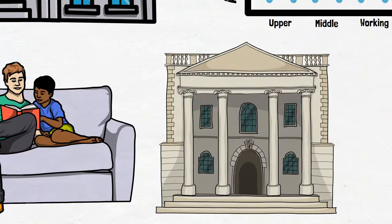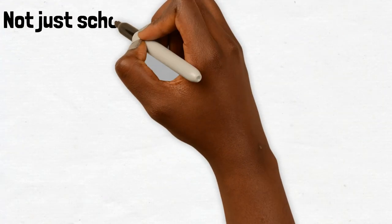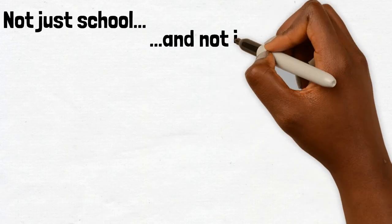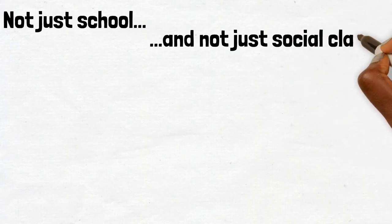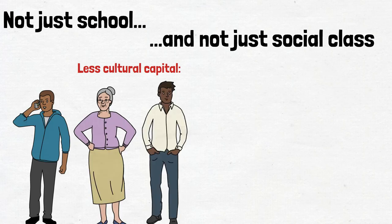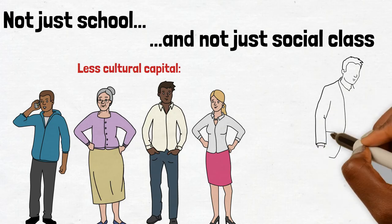Cultural capital is certainly not limited to school — it applies to all life stages and ages, and can be used to explain other inequalities such as those related to age, ethnicity, and gender. Neo-Marxists suggest that young and older people rather than those who are middle-aged, ethnic minorities, and women arguably have less cultural capital than the white male majority.